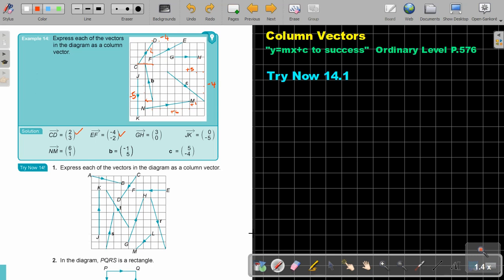So let's start the first one. AB. Remember the arrow on top. So it's going to be 1, 2, 3, 4, positive 4 and 1 down, so negative 1.